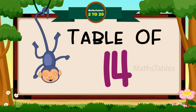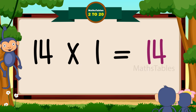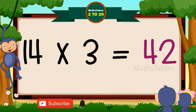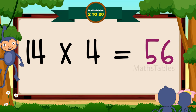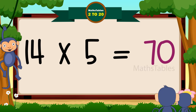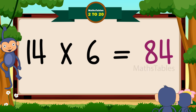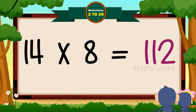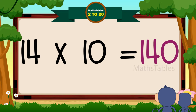Hi friends, now we will learn table of fourteen. Fourteen ones are fourteen. Fourteen twos are twenty-eight. Fourteen threes are forty-two. Fourteen fours are fifty-six. Fourteen fives are seventy. Fourteen sixes are eighty-four. Fourteen sevens are ninety-eight. Fourteen eights are hundred twelve. Fourteen nines are 126. Fourteen tens are 140.